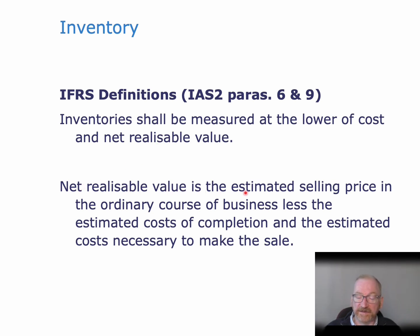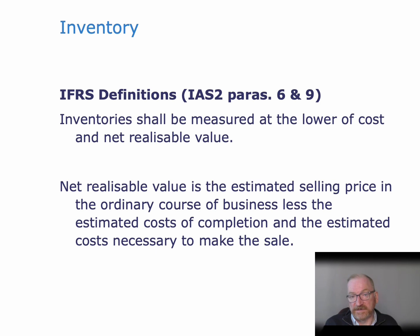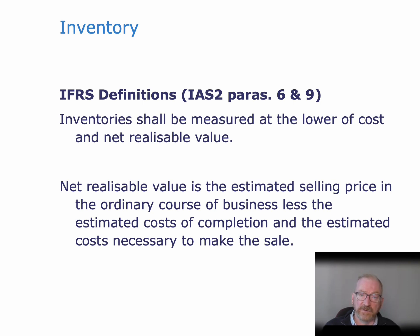Net realisable value is the estimated selling price in the ordinary course of business, less the estimated cost of completion and the estimated cost necessary to make the sale. So what this rule is saying is that you should value inventory at the lower of what it costs you to make the inventory and what you expect to get for the inventory minus any completion or selling costs.